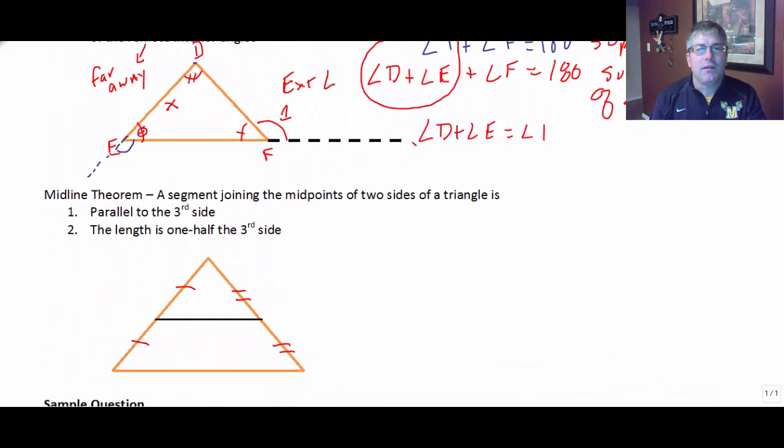Another new concept in chapter 7 is the midline theorem. And the midline theorem says that we have a triangle. Triangle A, B, C.